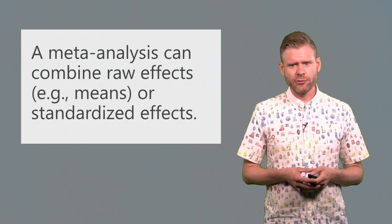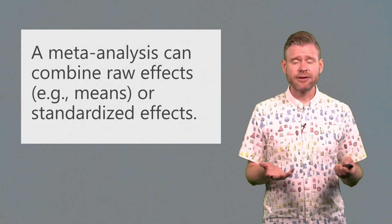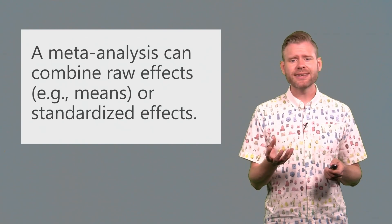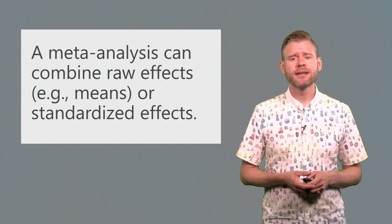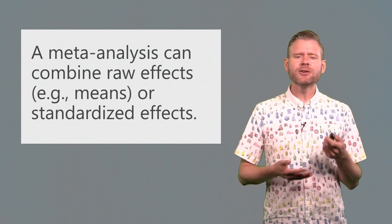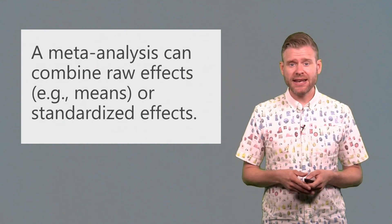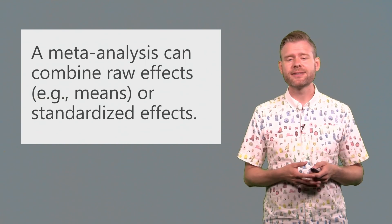We can use a meta-analysis for this. It can be used to combine either raw effects—if all of the studies have exactly the same dependent variable, you can just pool them all together—or if all studies use slightly different ways to measure something, we can use standardized effects. A meta-analysis can be performed on both the raw effects or standardized effects.